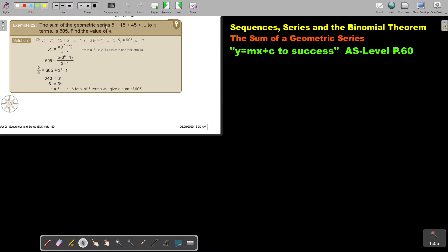The sum of a geometric series to N terms is 605. Find the value of N. So there is the series. A is 5. I can divide to see that the value of R will be 3. And then I basically just substitute it in this formula.